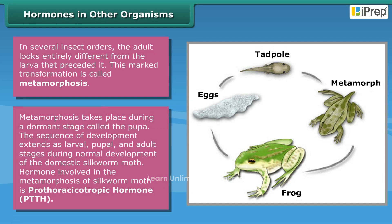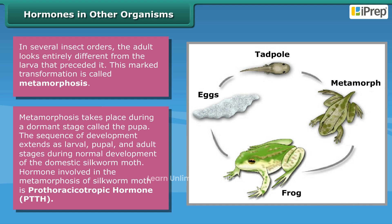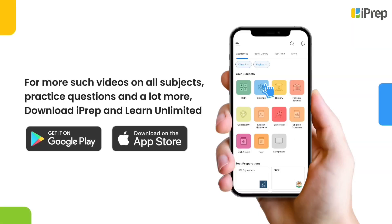Metamorphosis takes place during a dormant stage called the pupa. The sequence of development extends through larval, pupal, and adult stages. During normal development of the domestic silkworm moth, the hormone involved in metamorphosis is prothoracicotropic hormone, or PTTH.